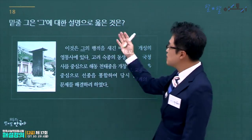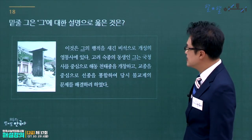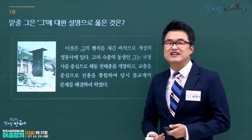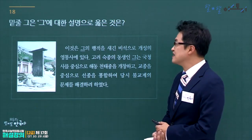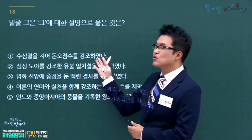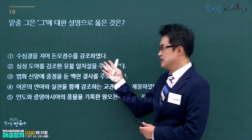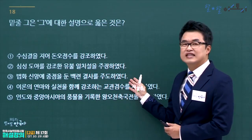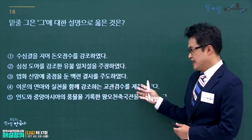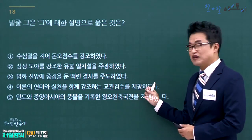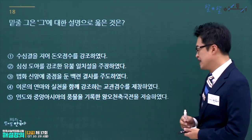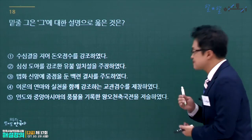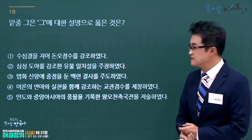고려 숙종의 동생이며 천태종을 개창한 인물은 의천입니다. 의천에 대한 설명으로 옳은 것을 고릅니다. 돈오점수·진헐은 지눌, 유불일치설은 혜심, 백련결사·법화신앙은 요세, 교관겸수와 흥왕사를 중심으로 교장 편찬이 의천입니다. 정답은 4번, 교관겸수입니다.